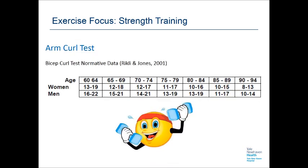The arm curl test, or biceps curl test, is designed to assess whether an individual has the upper body strength required for household and other activities that involve carrying and lifting. The individual performs a bicep curl using a five-pound weight for women or an eight-pound weight for men using proper form. Record the total number of repetitions completed in 30 seconds. The norms for this assessment are listed in the table.